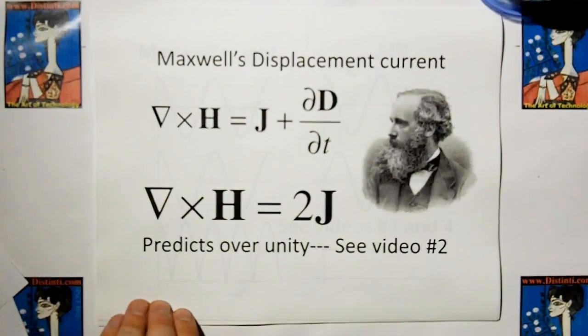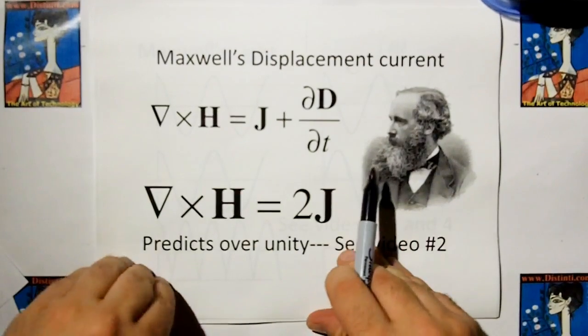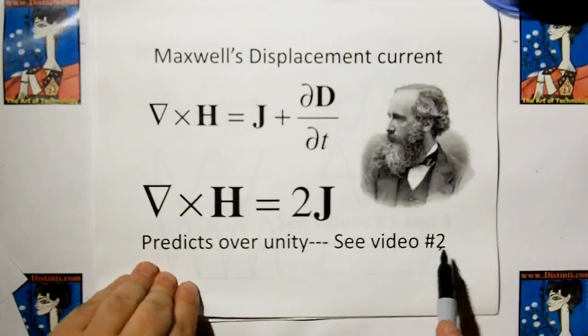Maxwell's displacement current, a fraud upon frauds. If you calculate it for a closed loop inductor, you get 2J, which is over unity. See video number two.